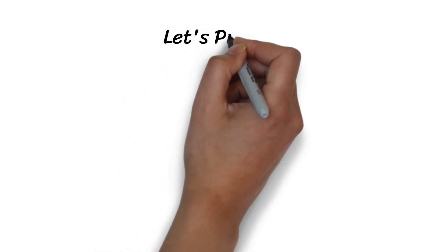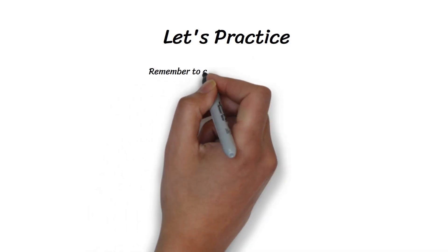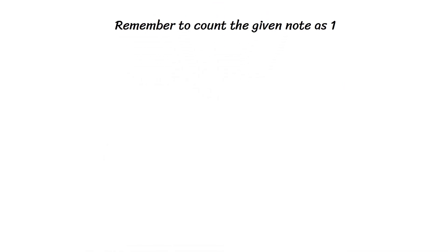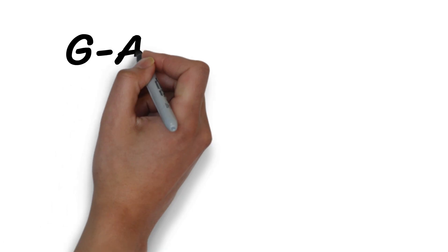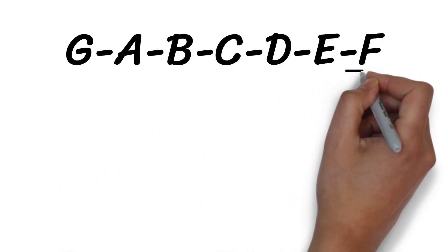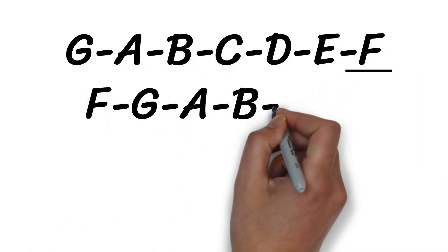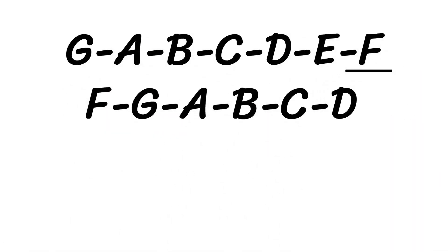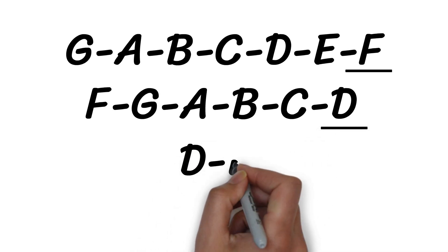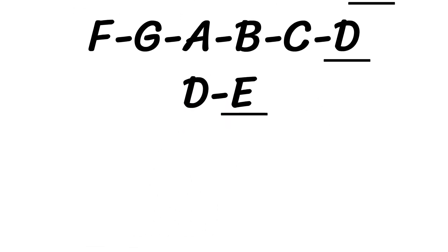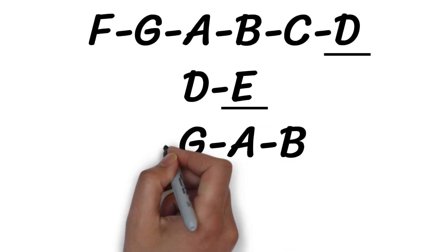Now let's practice a little together. Remember to count the given note as 1. Seven above G is F. Six above F is D. Two above D is E. Four below B is F.